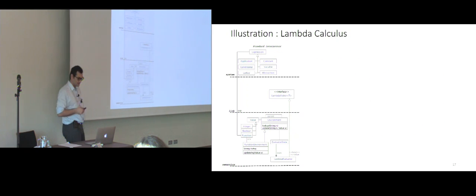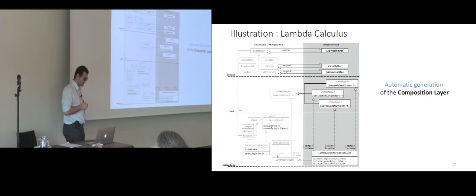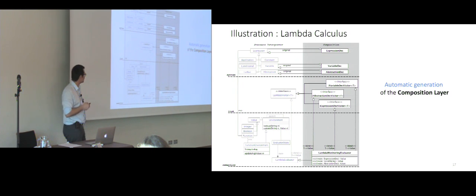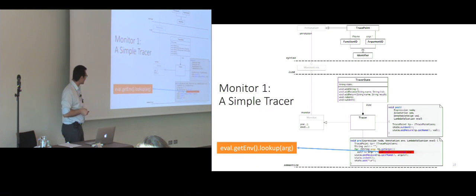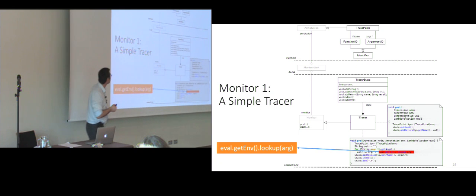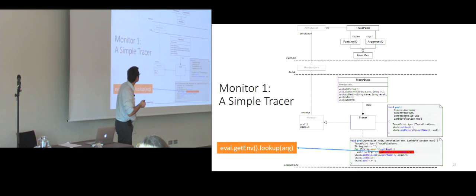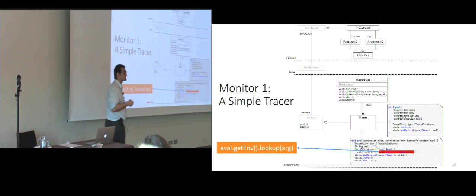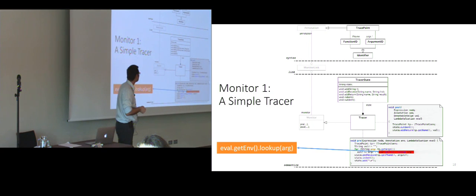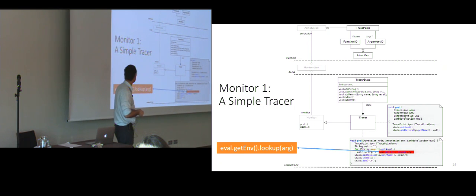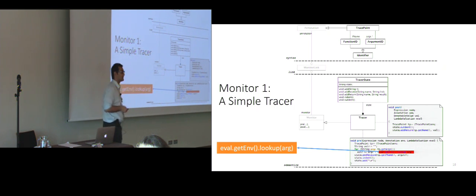We have shown in the paper an illustration on the simple lambda calculus, for which we generated automatically the annotations and the combination layer. Here you have a simple tracer: the trace syntax is basically a trace point which contains a function identifier and a list of argument identifiers. The tracer state is a string with its operations, and the tracer pre and post functions — the most interesting thing is the call to the evaluator's lookup function to find out the value of an argument during a function call.